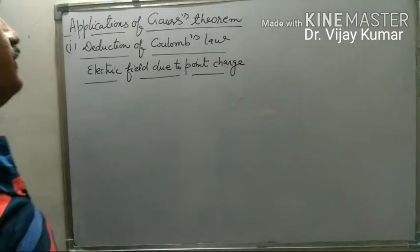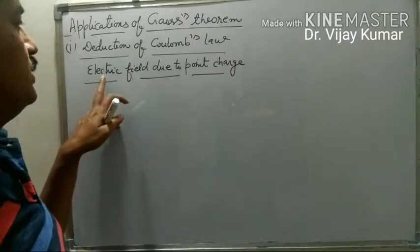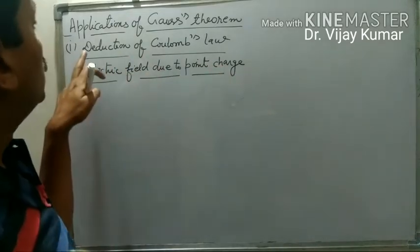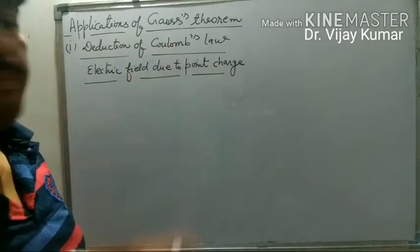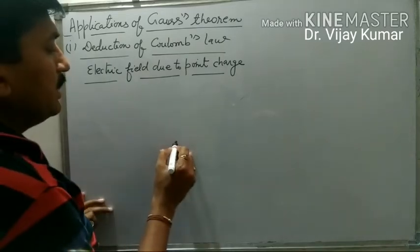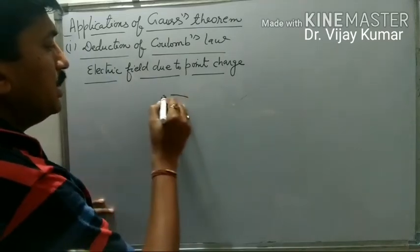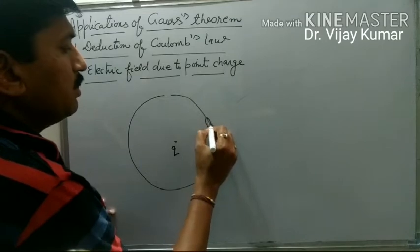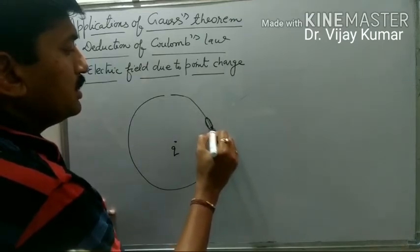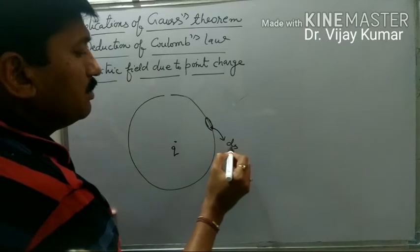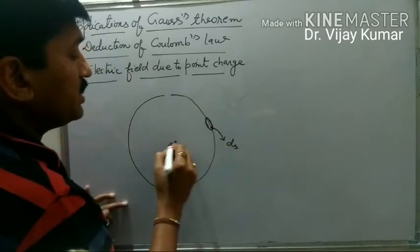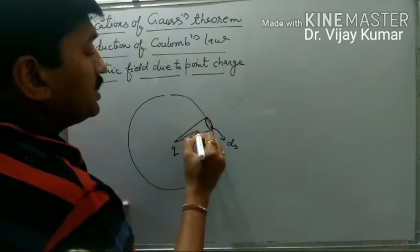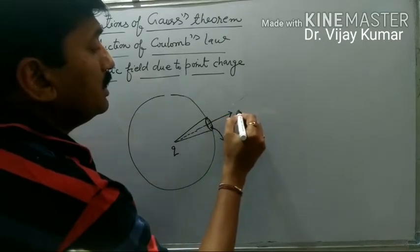Now we discuss the first application of Gauss theorem, in which we derive the formula of electric field due to a point charge — it is also a deduction of Coulomb's law. Suppose this is a charge particle situated at the center of a sphere. We consider that there is a small surface area ds.